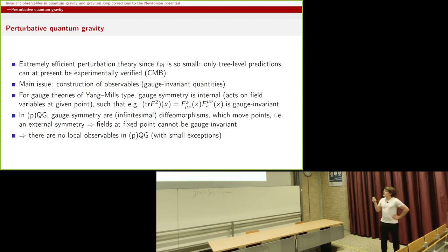But in quantum gravity, perturbative, you can also remove the quantum. Gauge symmetry is something very different. They are diffeomorphisms, or infinitesimal diffeomorphisms, if it's perturbative, and those move points. So any field at a fixed point can, by definition, essentially not be gauge invariant. And that means that there are no local observables. There was, of course, always exceptions to the rule, but this is sort of the main message.